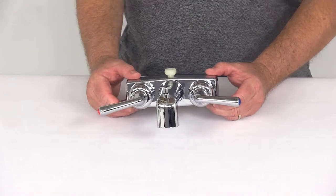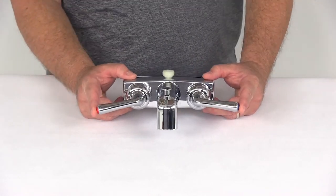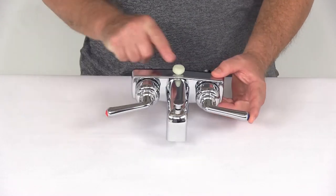That should do it for the review on the Phoenix faucets chrome finish four inch dual handle RV tub and shower diverter faucet with the D spud.